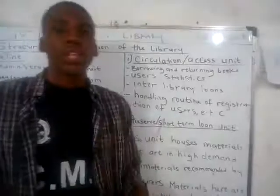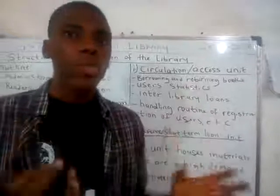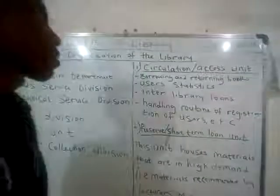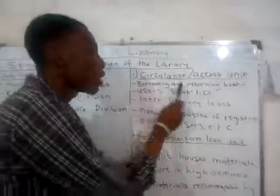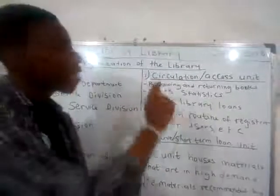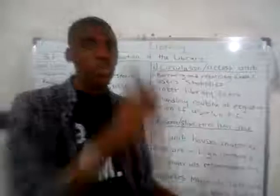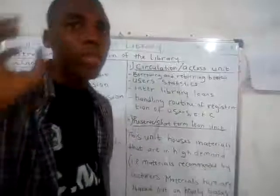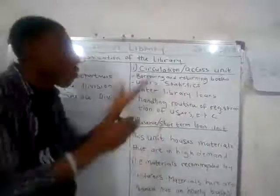The first unit is the Circulation or Access Unit. This unit is in charge of all borrowing and returning of books. Students in a university setting have borrower's tickets. These staff are in charge of issuing borrower's tickets to students. When a student identifies a book they want, they register with their borrower's ticket, receive the book, and are told the date by which to return it.